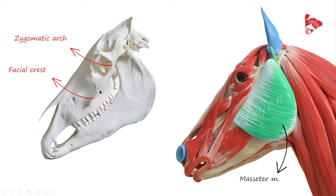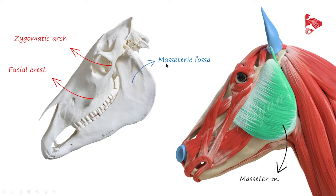The zygomatic arch is formed by two processes: the zygomatic process of the temporal bone and the temporal process of the zygomatic bone, which meet together. The masseter muscle originates from the zygomatic arch and the facial crest, and inserts to the masseteric fossa — a depression on the lateral surface of the mandible.